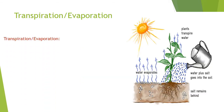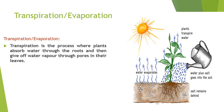Transpiration is the process where plants absorb water through the roots and then give off water vapor through pores in their leaves. The water given to plants is absorbed, and the plant gives away almost 90% of what it gets to the atmosphere through pores in its leaves called stomata. The rest is used for photosynthesis, which we will discuss in another video.